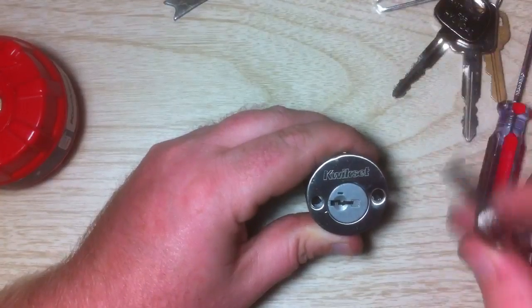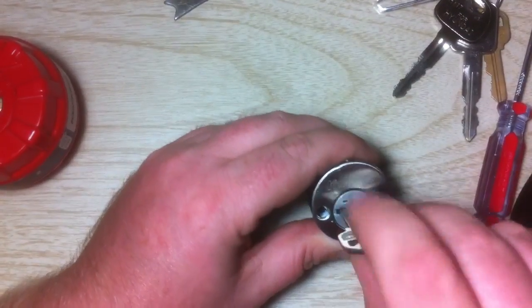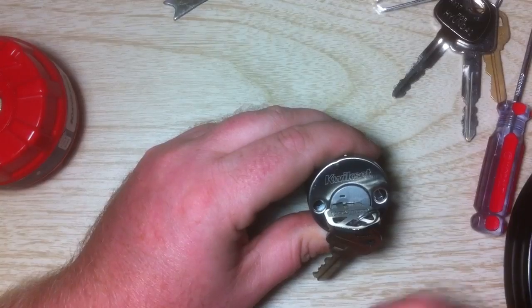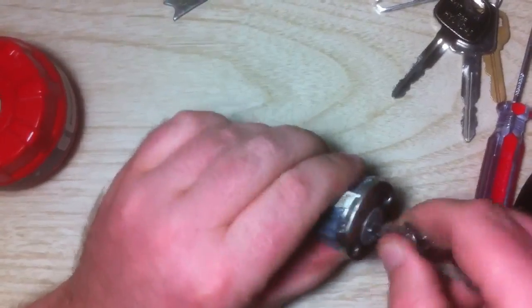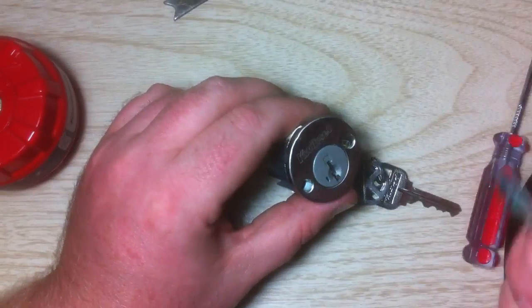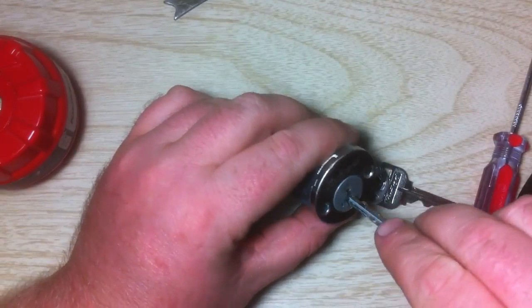Put whichever key that you want to operate the lock into the plug at three o'clock, turn it back to twelve o'clock, remove the key, and it's been rekeyed. You can verify it's been rekeyed because this key no longer works.